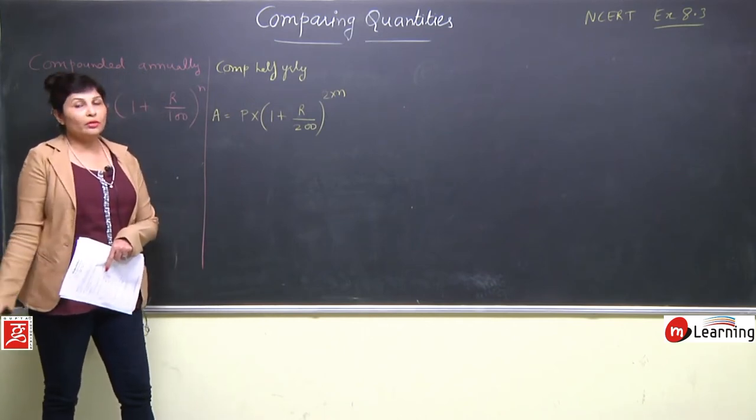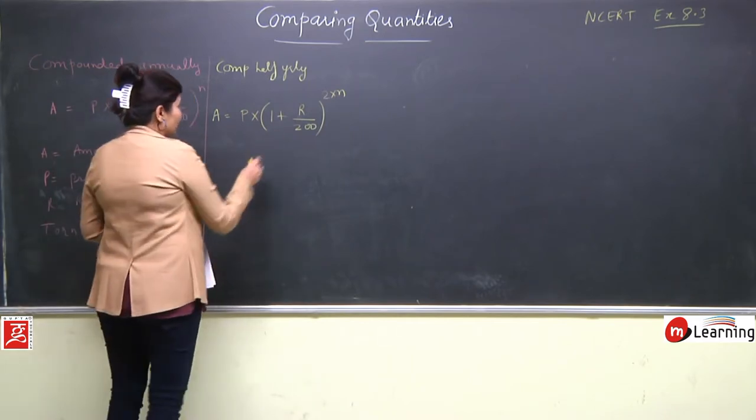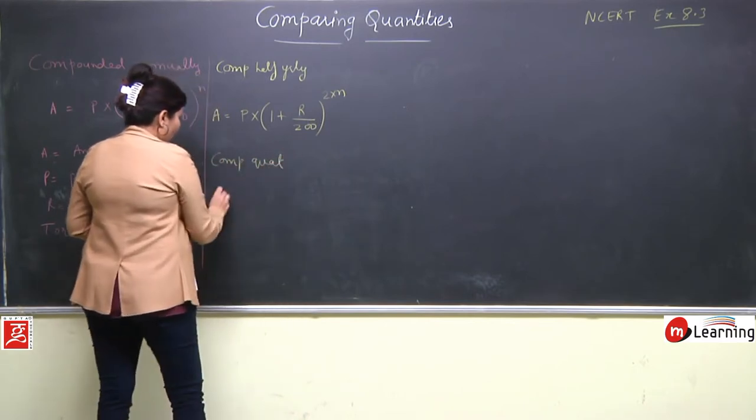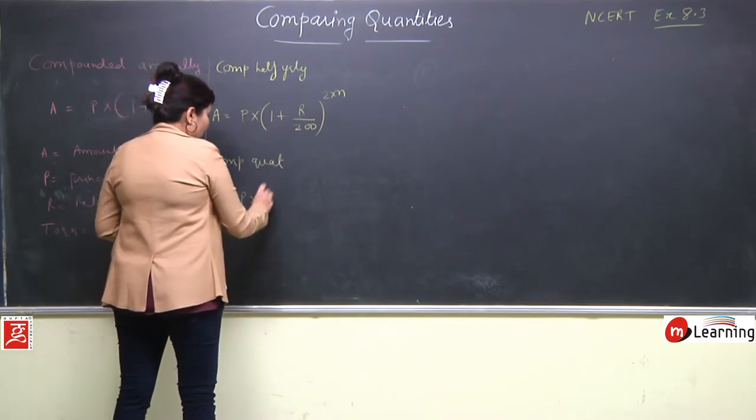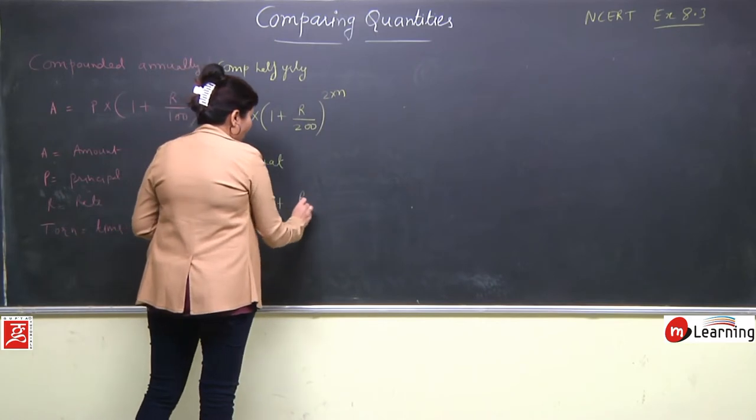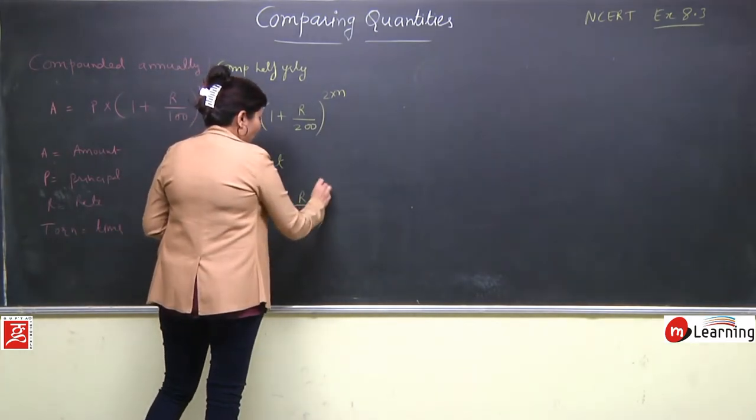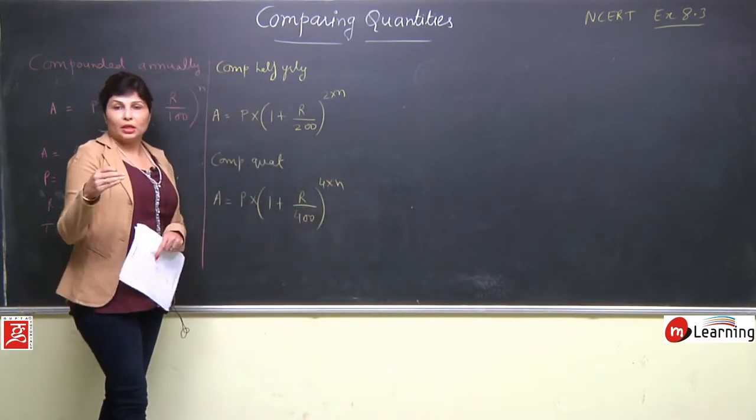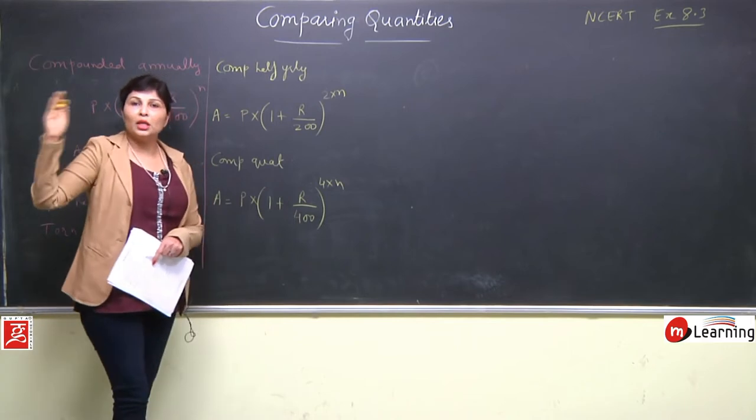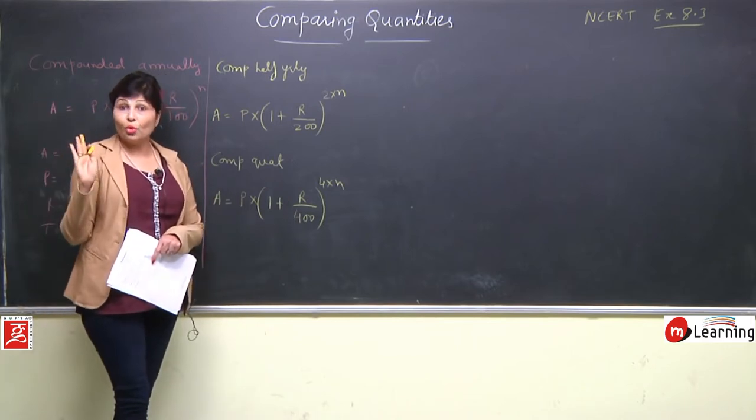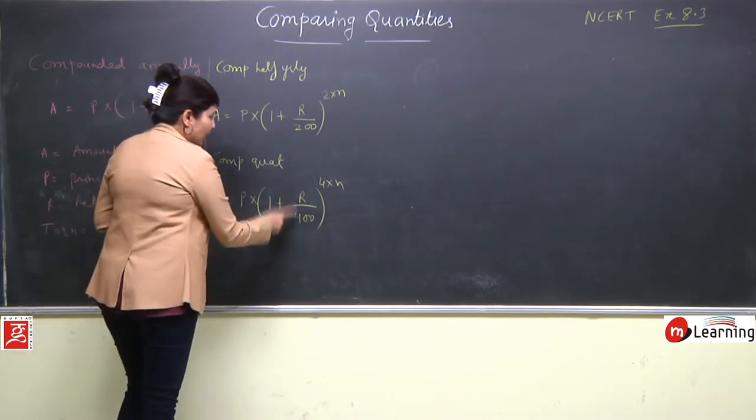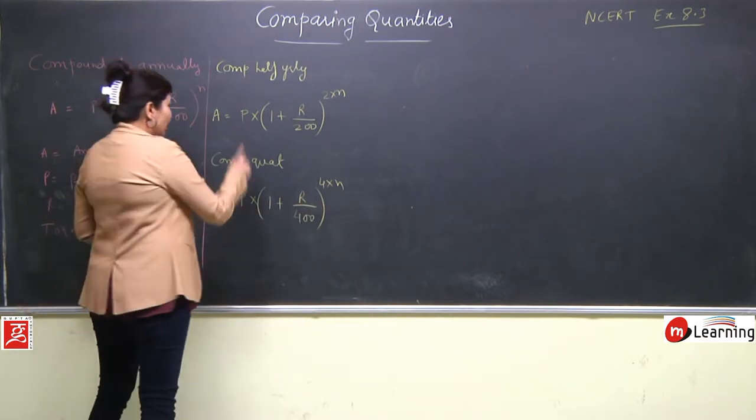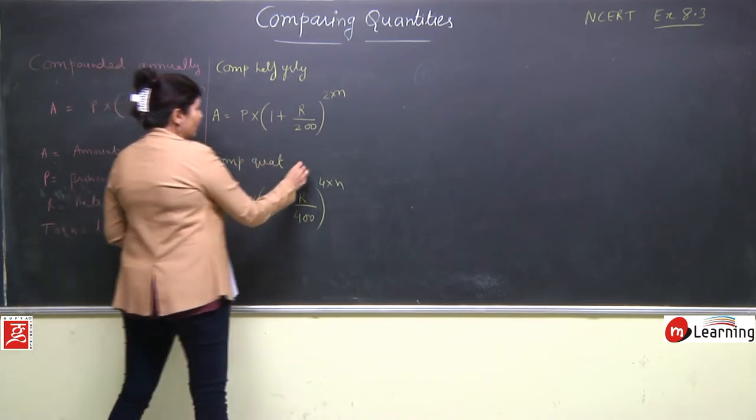For compounded quarterly, the formula is A = P(1 + r/400)^(4n). Quarterly means in 12 months there are four intervals of 3 months each, so rate becomes one-fourth and time is multiplied by four.